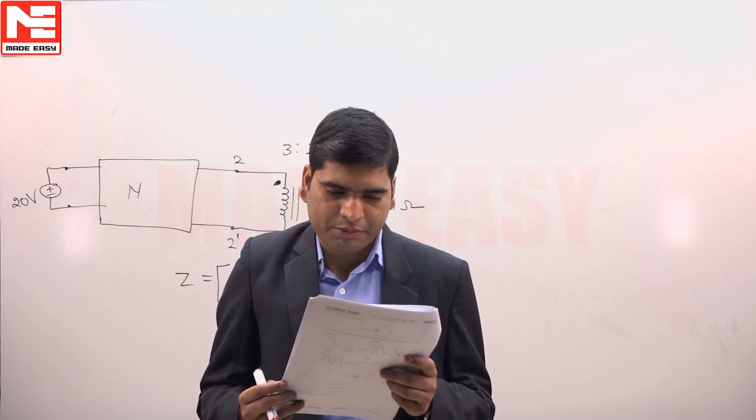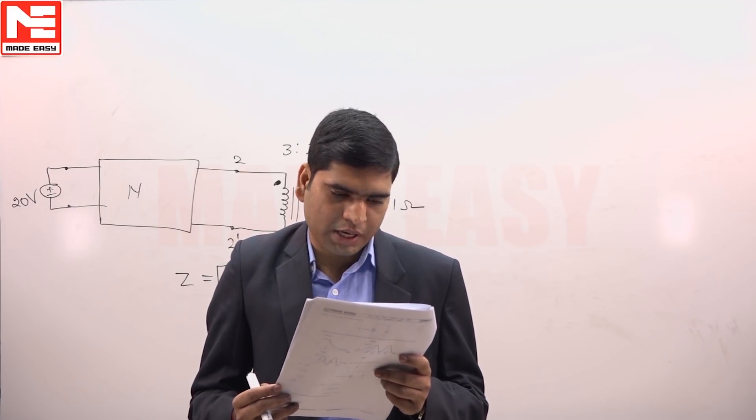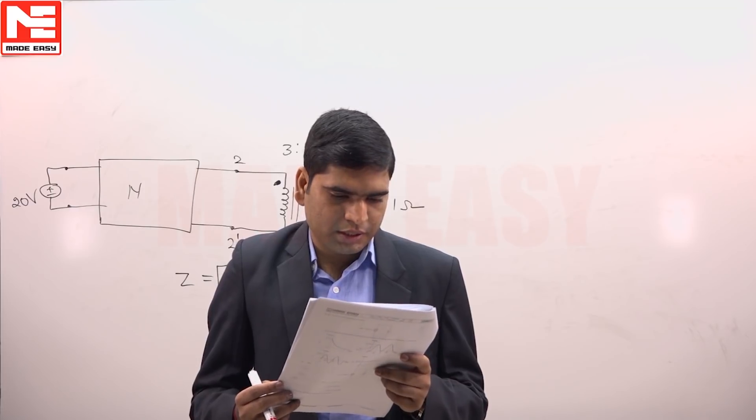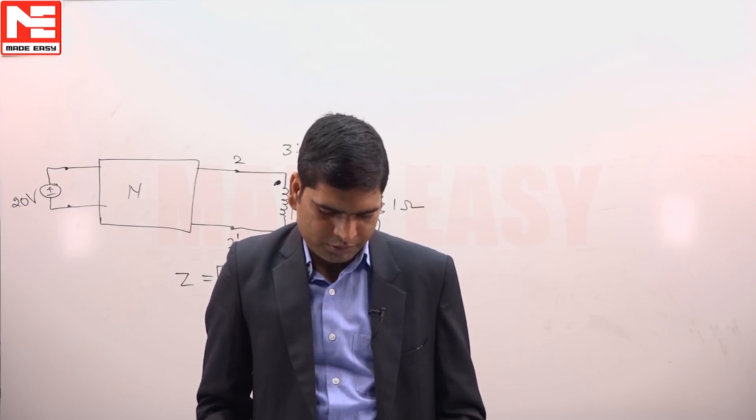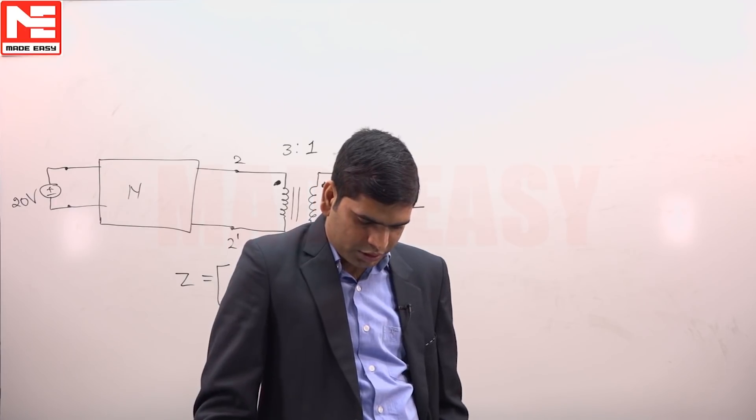In this question, the network has Z parameter, and the transformer used is ideal. We need to calculate the power delivered to the 1 ohm resistor.